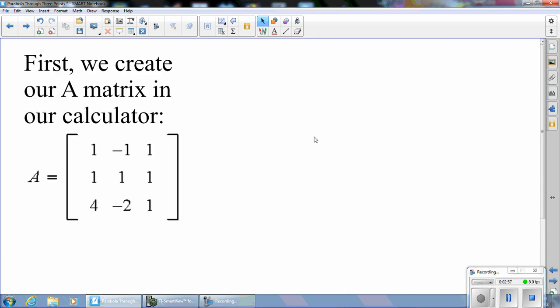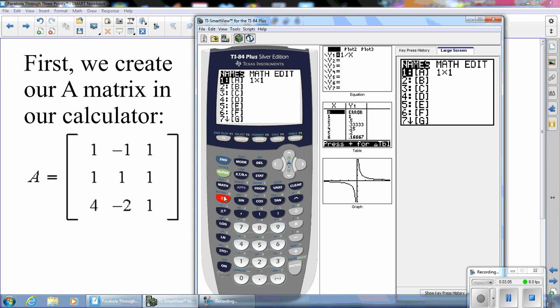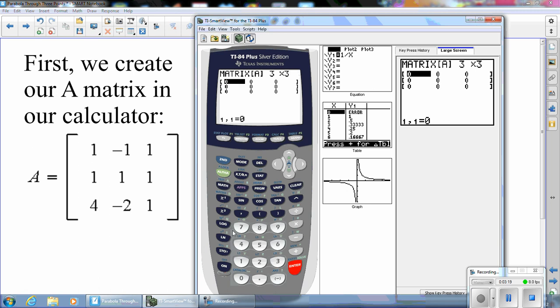First, we create our A matrix in our calculator. So we go to the matrix menu. And we're going to create a 3 by 3 matrix labeled A. So we will edit matrix A. And it's going to be 3 by 3. And the elements are 1, negative 1, 1, 1, 1, and 1, and 4.